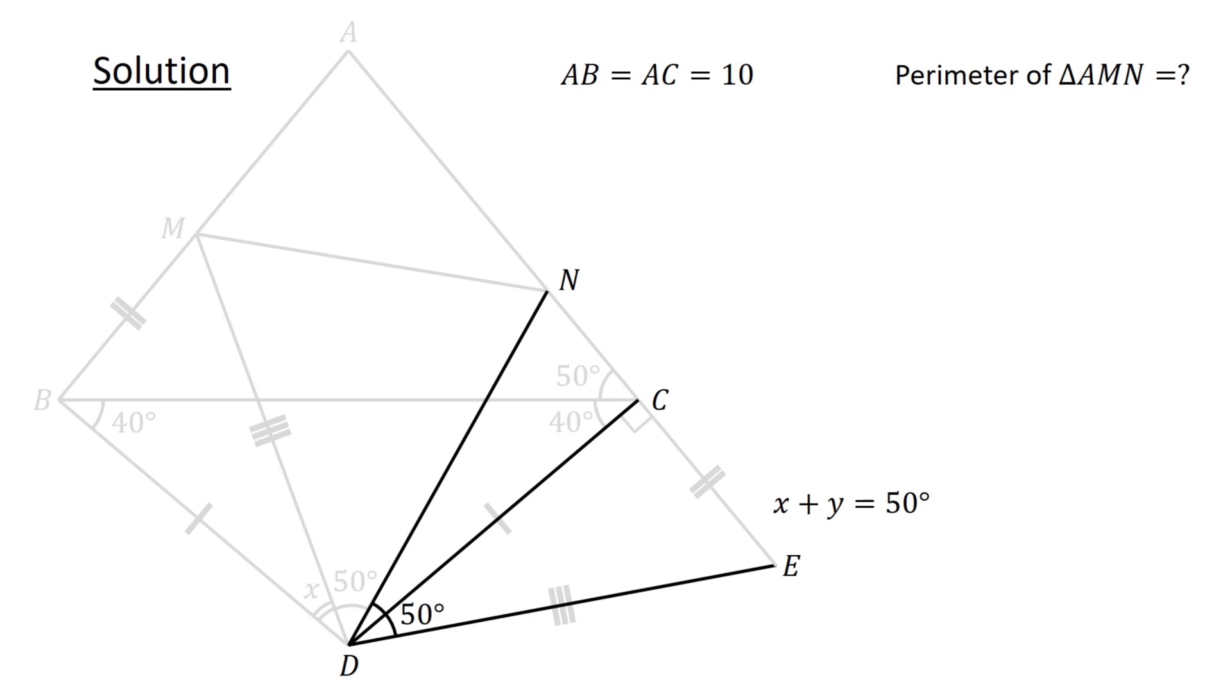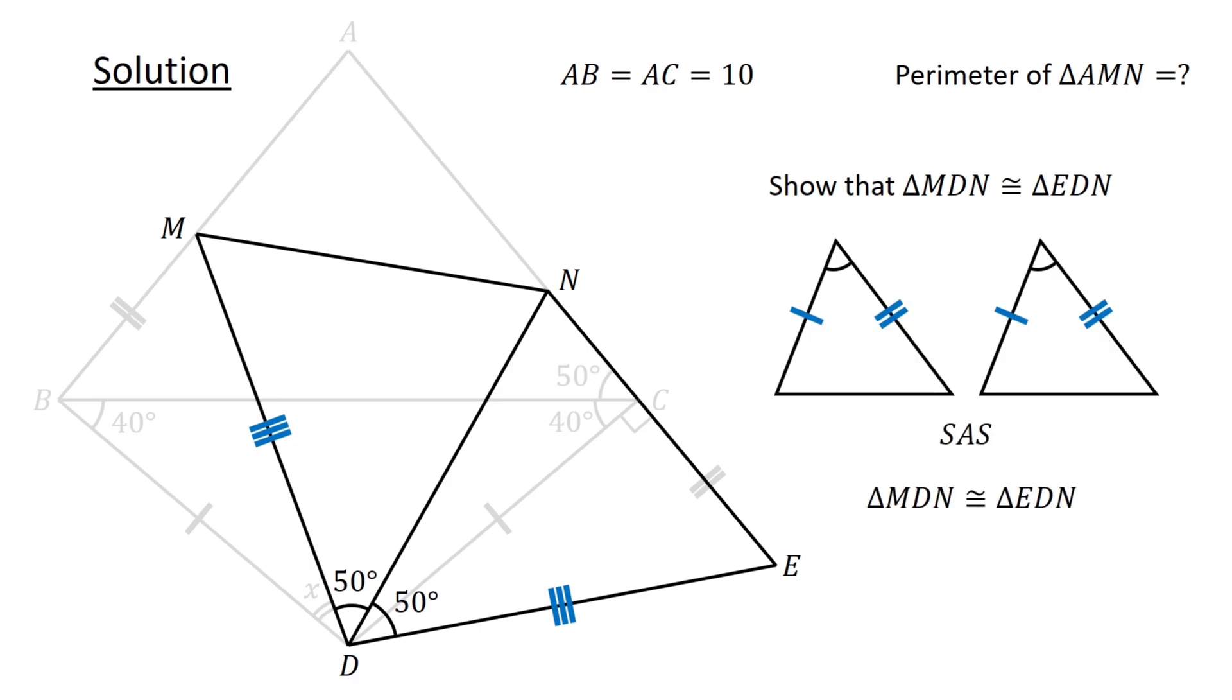Next, consider triangle EDN and triangle MDN. Let us show that triangle MDN is congruent to triangle EDN. Since MD equals ED, DN is common to both triangles, and the included angles are equal, by the SAS congruency test, triangle MDN is congruent to triangle EDN.